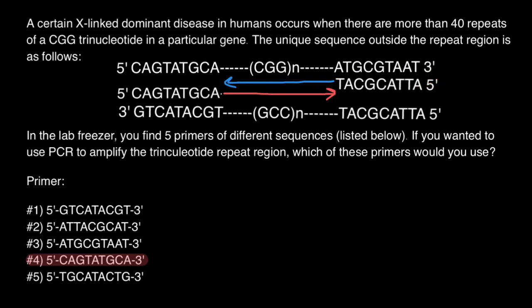Now let's find our reverse primer: 5'-CATT. Only number 2 meets our requirement. So number 2 is going to be our reverse primer. We have forward primer number 4 and reverse primer number 2 in order to run this PCR reaction and amplify the repeat sequence in the middle. Subscribe and see you in the next video. Goodbye.